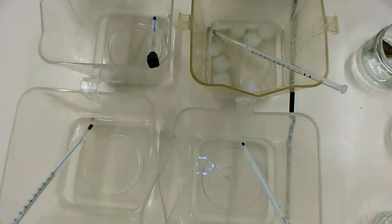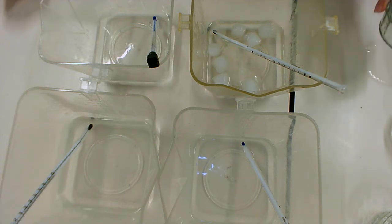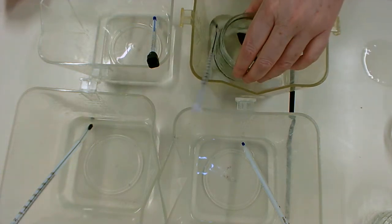So the wax needs a temperature higher than 60 degrees to start melting. Now I'm going to do the chocolate. Same process.